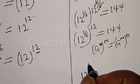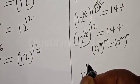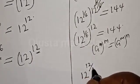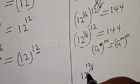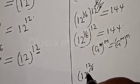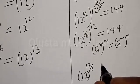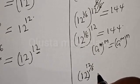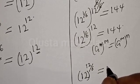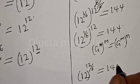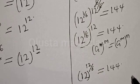This gives us 12 raised to power 12 divided by 6, which must equal 144. That simplifies to 12 raised to power 12 divided by 6.